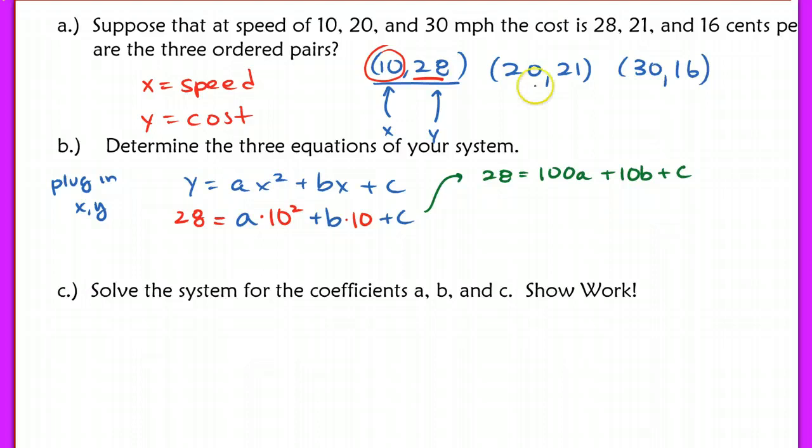Now I'm going to do the same thing. I'm going to repeat that same process, plugging in the next coordinate, 20, 21. This time I have 21 equals a times 20 squared plus b times 20 plus c.